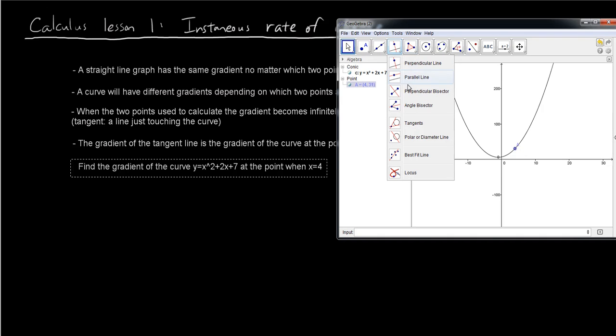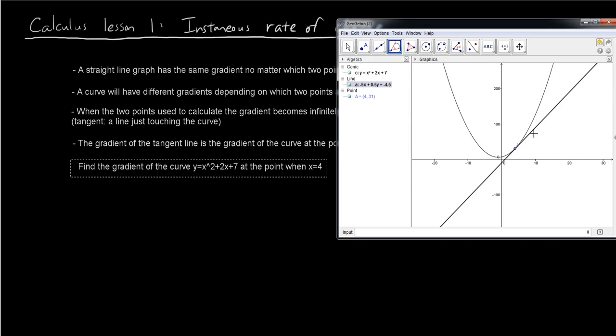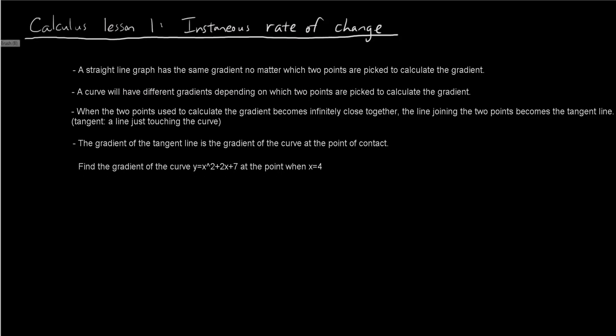And what I'm going to do is I'm going to draw a tangent line at this point. So click here, click tangents, click the point and then click on the curve. And you can see I have tangent line at point A. And for my line I'm going to right click on that and choose equation y equals mx plus c. And we can see that the gradient of the tangent line is 10.